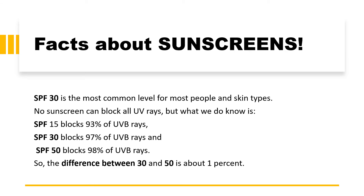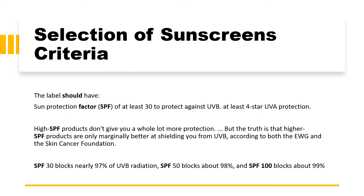When choosing a sunscreen, two things are very important: the SPF factor and the UVA star rating. No sunscreen can block all UV rays, but SPF 15 blocks 93% of UV rays, SPF 30 blocks 97%, and SPF 50 blocks 98%. The difference between SPF 30 and SPF 50 is hardly 1%. It is recommended to use SPF 30 along with high star ratings — at least SPF 30 for UVB and at least 4-star UVA protection.